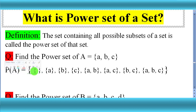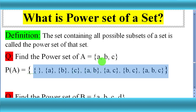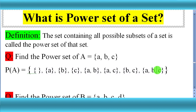Now we have to write all the subsets of set {a, b, c}. First of all, write the empty set, then write single elements a, b, and c. After single elements, write two-element subsets: a b, a c, and b c. Finally, write the improper subset a b c.